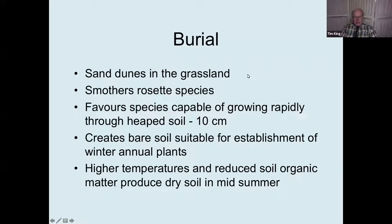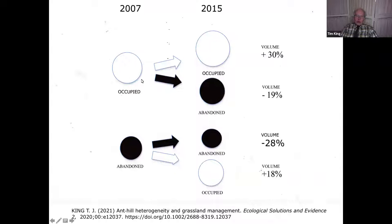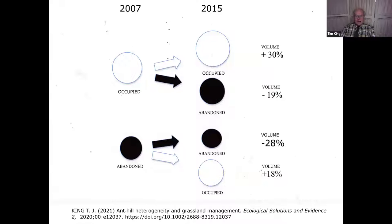They're basically producing sand dunes in the grassland. Not all are occupied by ants, because ant colonies frequently die, perhaps when the queens die. Comparing the same 250 anthills at Aston Rowant National Nature Reserve in 2007 and 2015, occupied anthills increase in volume while abandoned anthills decrease in volume as the chambers and channels collapse. This increases heterogeneity because you get plant and animal succession on the occupied and abandoned anthills, which is rather different.